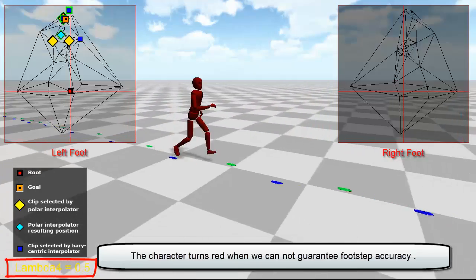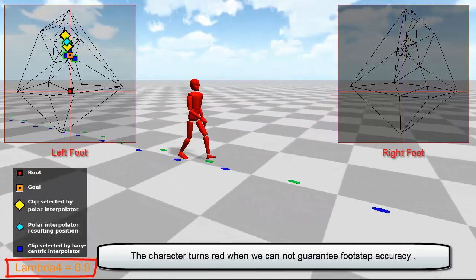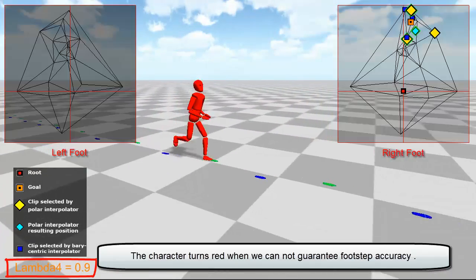When lambda 4 equals 1, the system performs polar gradient band interpolation based on root velocities.